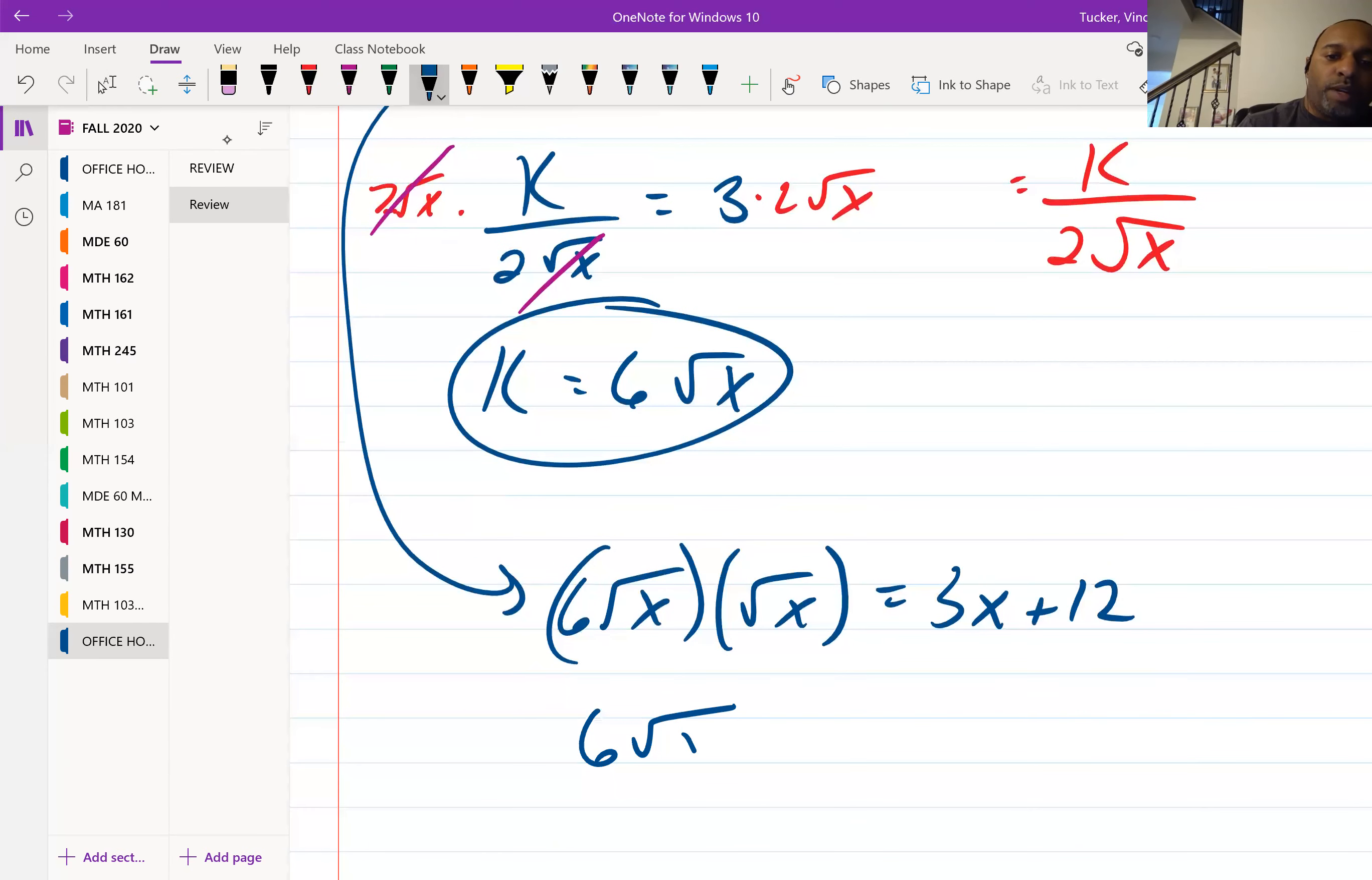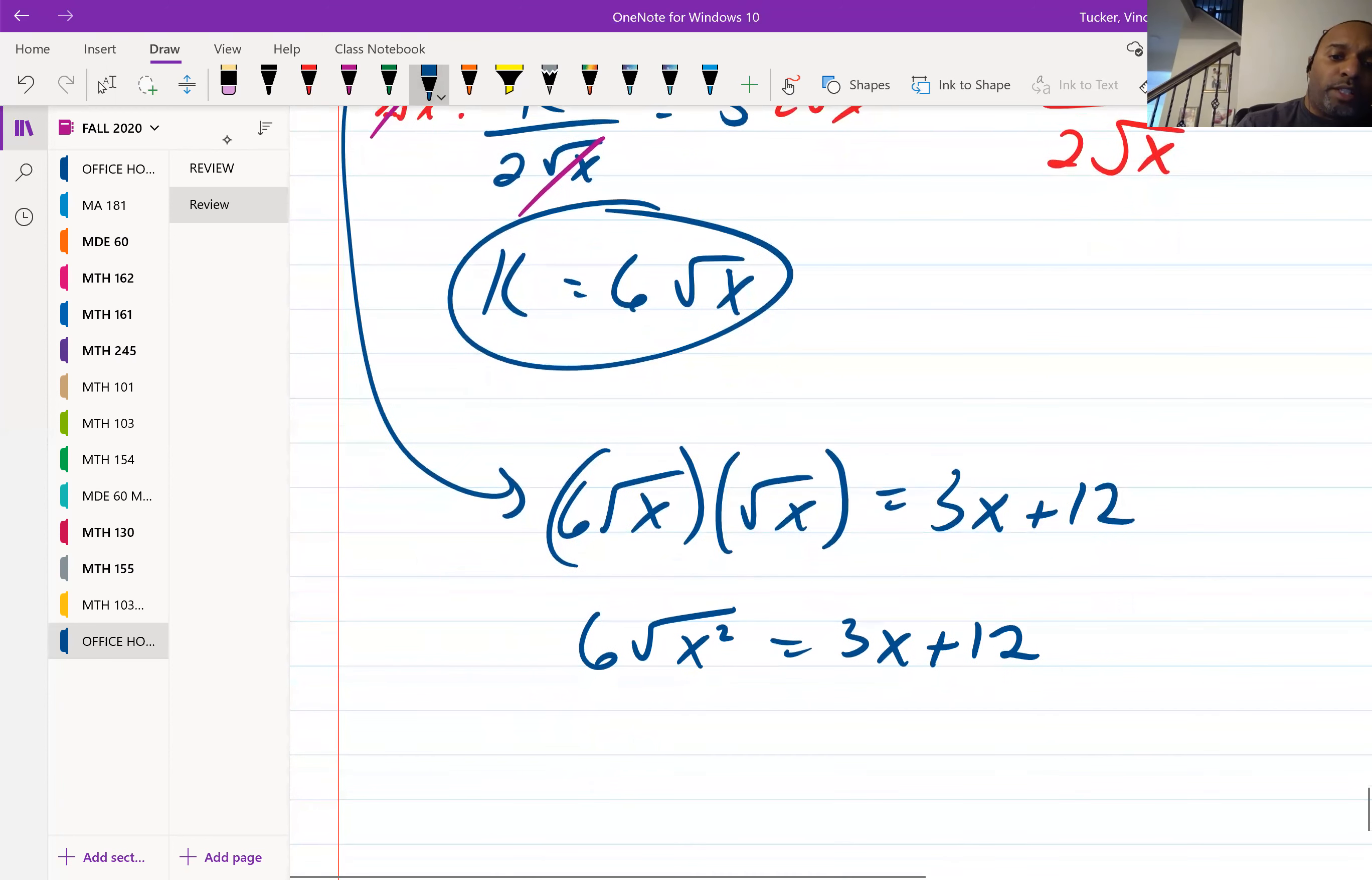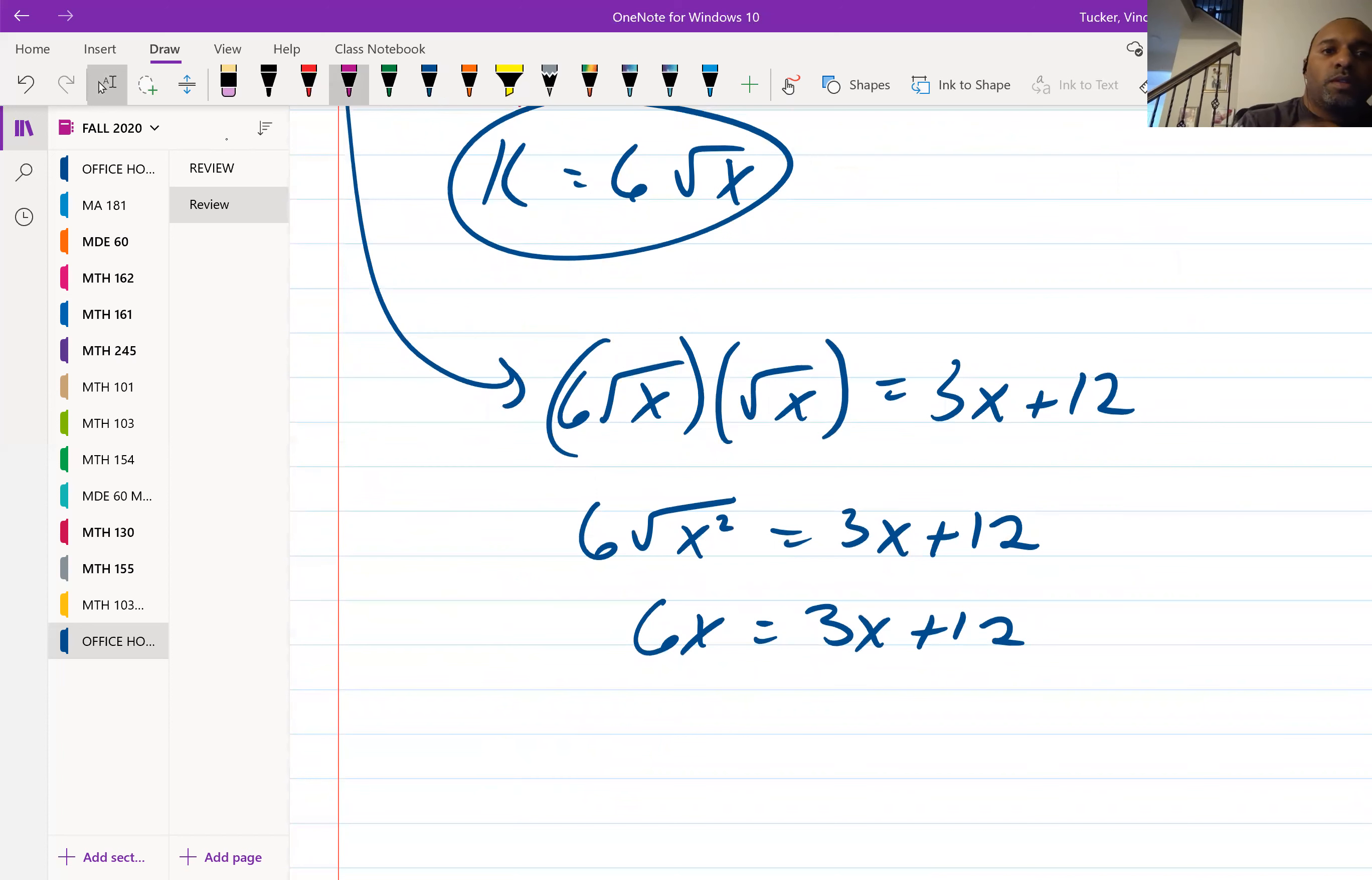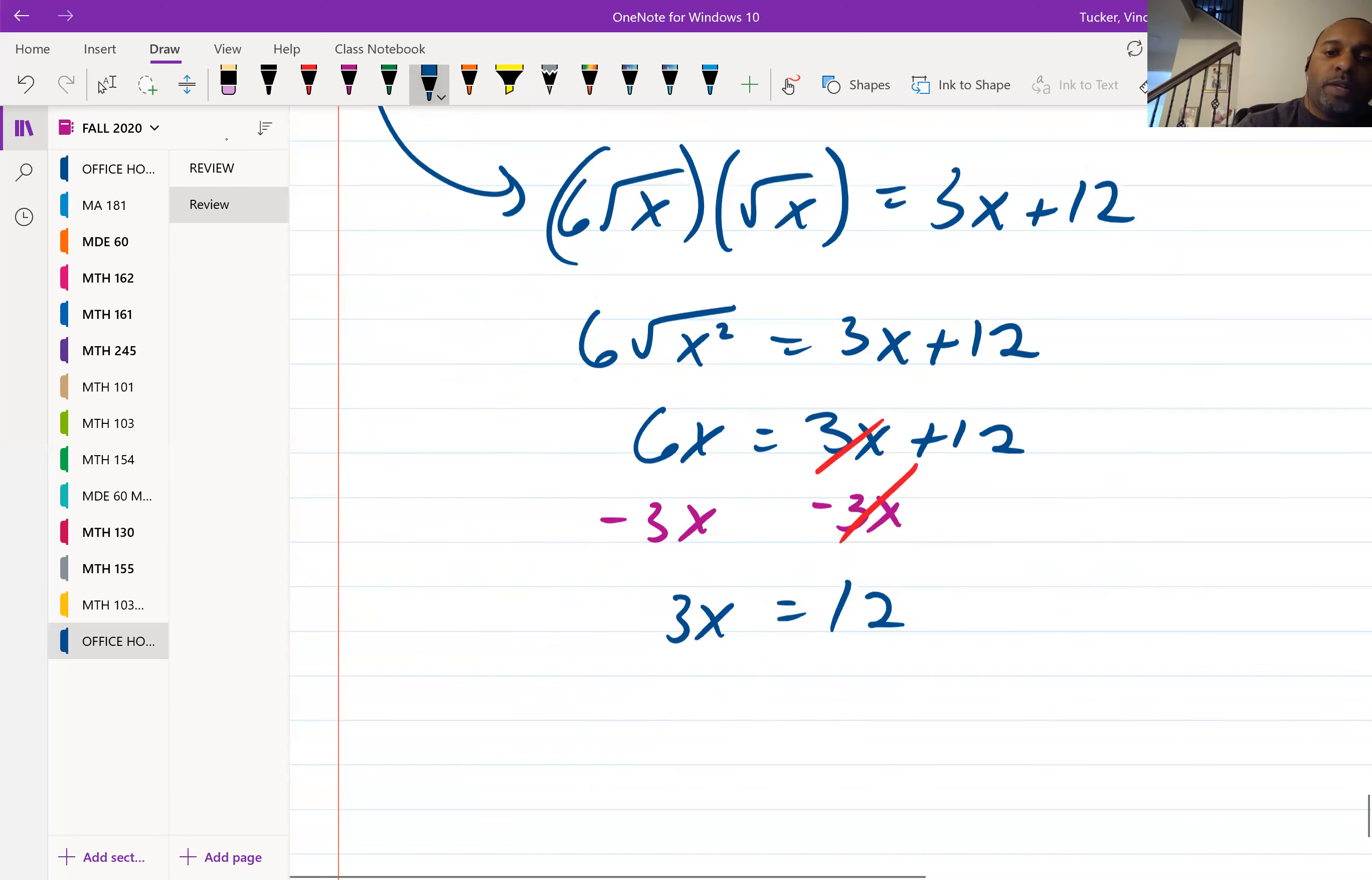Square root of x times square root of x is square root of x squared. You just multiply what's under your radicals. So that'll just be 6x. Subtract 3x from both sides, solve for x. So that'll be 3x equal to 12. Divide both sides by 3, x is equal to 4.